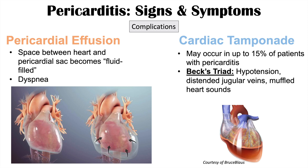When there is so much fluid within the pericardial sac that the heart has difficulty receiving and pumping blood, this can cause tachycardia, tachypnea, and dyspnea — shortness of breath. If you want to learn more about these complications, please check out my lessons on these topics. If you haven't already, please like and subscribe for more lessons like this one. Thanks so much for watching and I hope to see you next time.